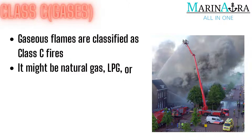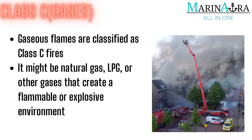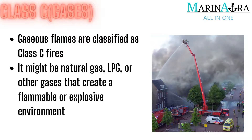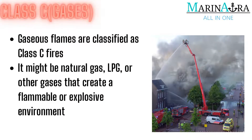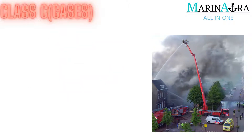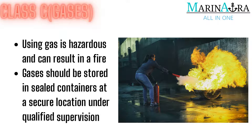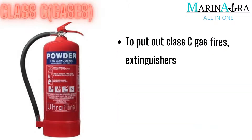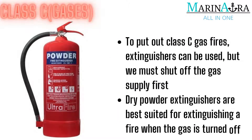Class C — Gases. Gaseous flames are classified as class C fires. It might be natural gas, LPG, or other gases that create a flammable or explosive environment. Working with gas is hazardous and raises the chance of a fire. Keep stored gases in sealed containers in a secure storage facility, and make sure gas work is done by qualified individuals. While extinguishers can be used to put out class C gas fires, the only safe way to do so is to turn off the gas supply. A dry powder extinguisher is the best type of extinguisher for putting out a fire when the gas supply is shut off.